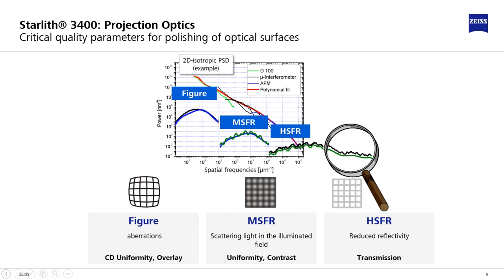HSFR usually is covered with scanning atomic force microscopes or AFMs. Too much HSFR leads to reduced reflectivity and system transmission.